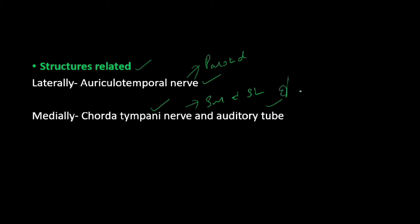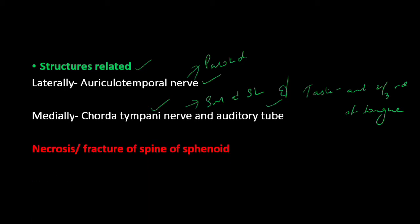The chorda tympani nerve also provides taste sensation over the anterior two-thirds of the tongue. In conditions like necrosis or fracture of the spine of sphenoid, these nerves will get damaged. The secretomotor supply to all three salivary glands — parotid, submandibular, and sublingual — will be lost, resulting in decreased salivary secretion. There will also be loss of taste sensation from the anterior two-thirds of the tongue due to involvement of the chorda tympani nerve.